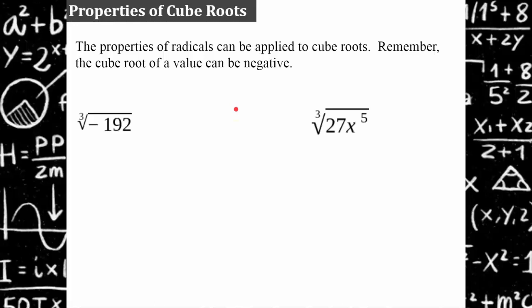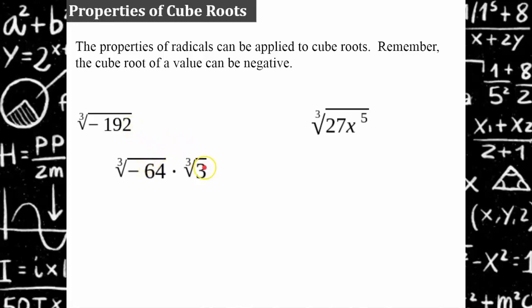We can also apply these properties to cube roots. The same properties apply from the previous video on product property of radicals, and the quotient property of radicals can both be applied to the properties of cube roots. So here I have the cube root of negative 192. I'm going to rewrite this radicand looking for perfect cubes. Negative 64 times 3 is equivalent to negative 192. So I can rewrite this as the cube root of negative 64 times 3, reminding you that the cube root of a value can be negative. The cube root of negative 64 is negative 4. The cube root of 3 is in simplest form. So the cube root of negative 192 in simplest form is negative 4 cube root of 3.